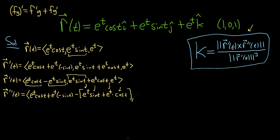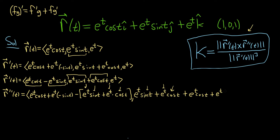Another product rule: derivative of the first is e to the t times sine t, plus the first e to the t times the derivative of sine, which is cosine t. And the last one: e to the t times cosine t plus e to the t times the derivative of cosine, which is negative sine t. And at the very end, the derivative of e to the t is e to the t.